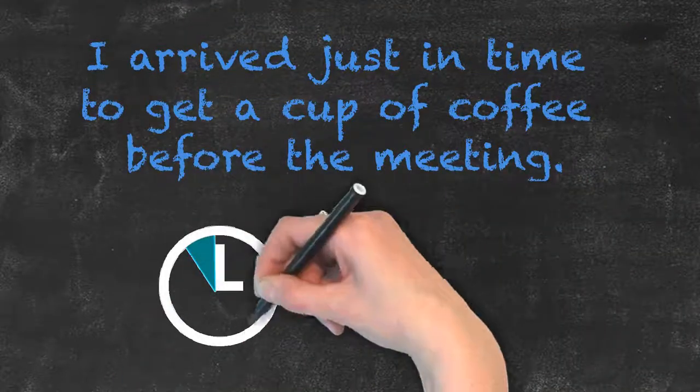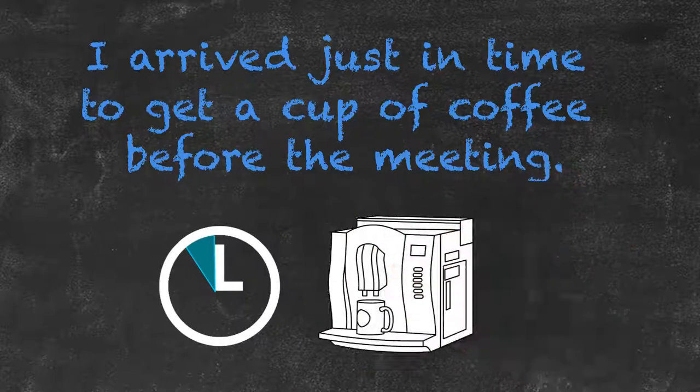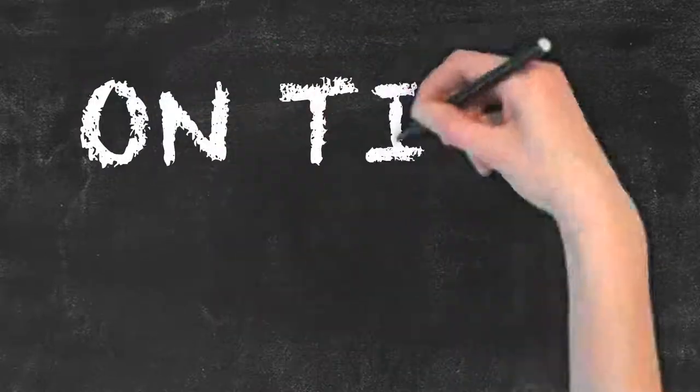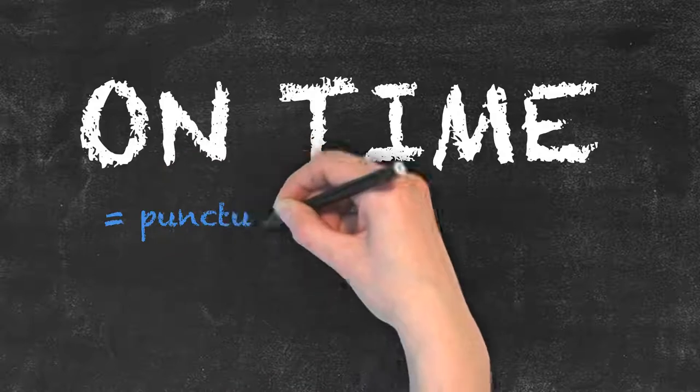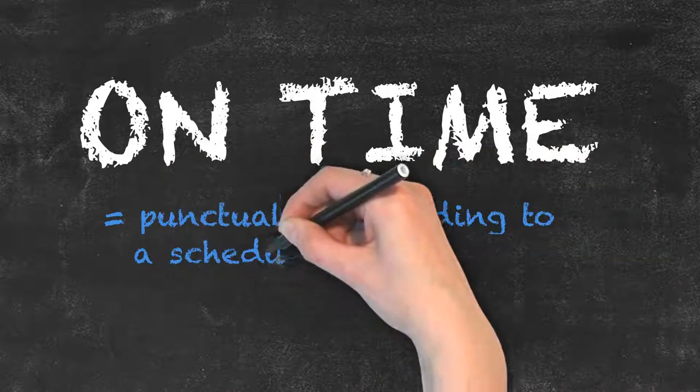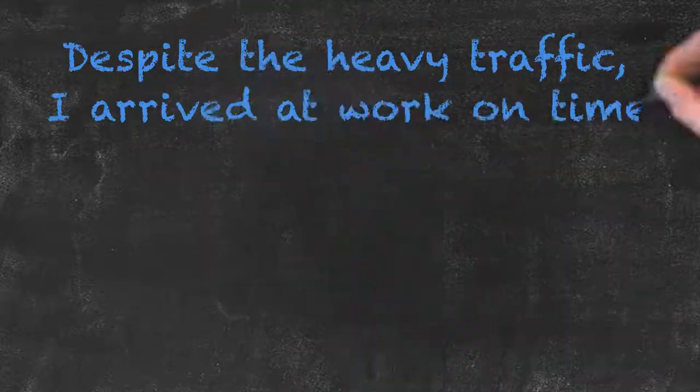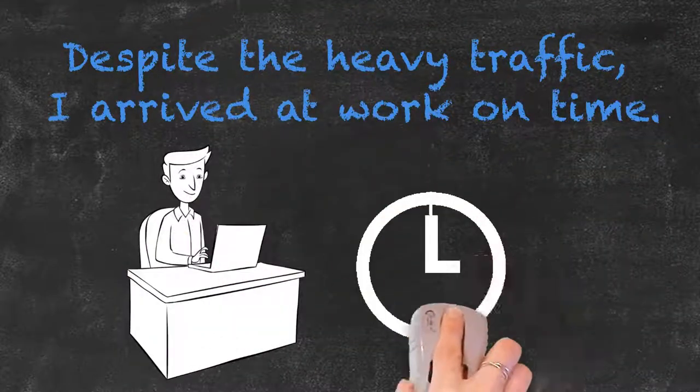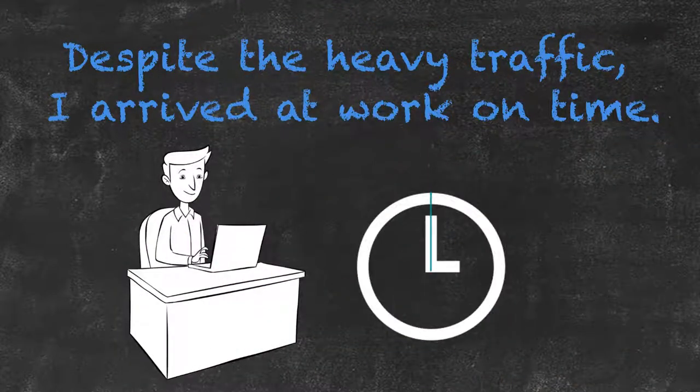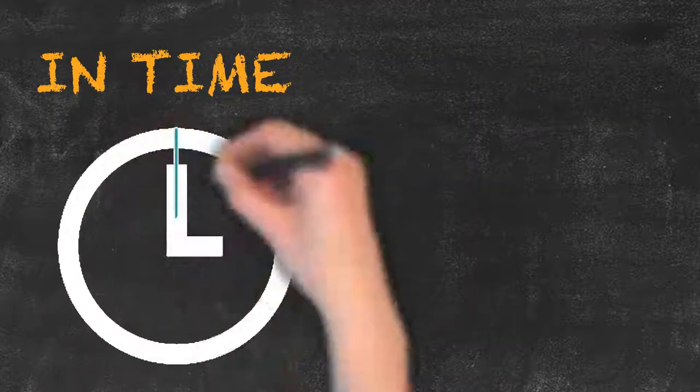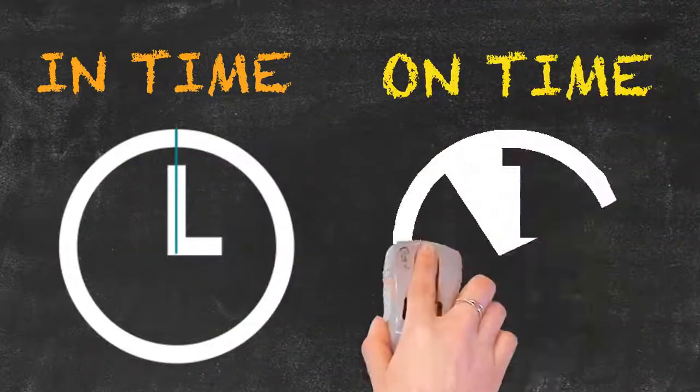On time, on the other hand, is used more in the sense of punctually, according to a schedule, and neither late nor early. Such as here: despite the heavy traffic, I arrived at work on time.